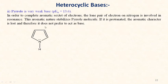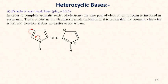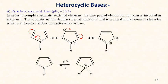Pyrrole is a very weak base with pKb value 13.6. In pyrrole, the lone pair on nitrogen is involved in resonance to complete the aromatic sextet of electrons. On protonation, the lone pair is not available to complete this sextet, the compound becomes non-aromatic and less stable. Therefore pyrrole is a very weak base.